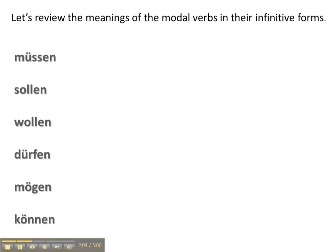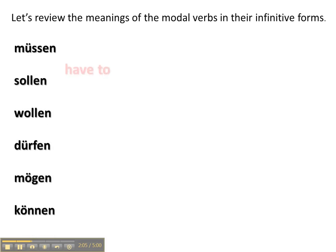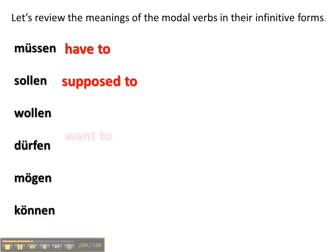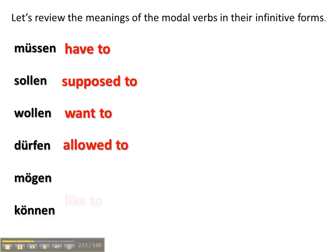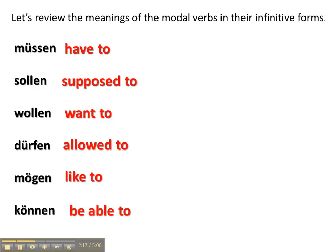So let's review the meanings of the modal verbs themselves for a minute. Müssen: have to. Sollen: supposed to or should. Wollen: want to. Dürfen: allowed to. Mögen: like to. And können: be able to.